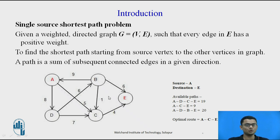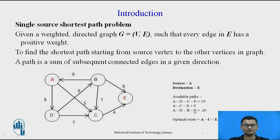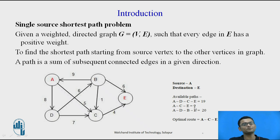Say the source node is A and the destination node is E. From A to E, how many possible paths are available? One path is A to D, D to C, C to E, which gives a collective weight of 19. Another path is A to C and C to E, with edges 5 plus 4 weighing 9. A third path is A to D, D to B, B to E, which weighs 20. So the optimal path is A to C and C to E, which weighs only 9 units.